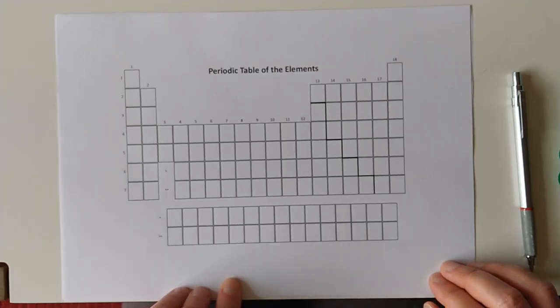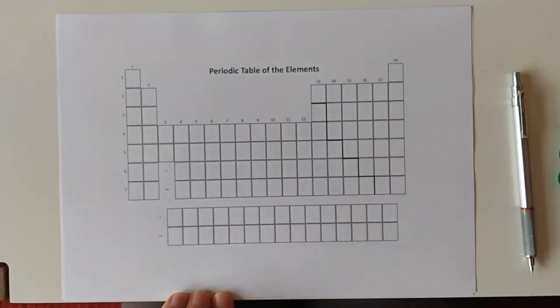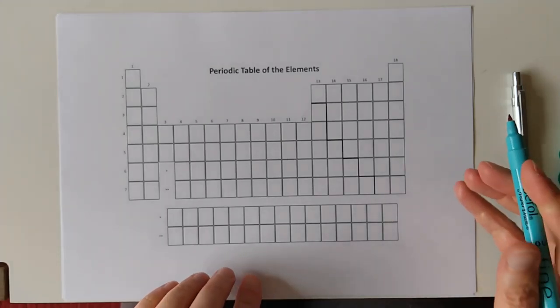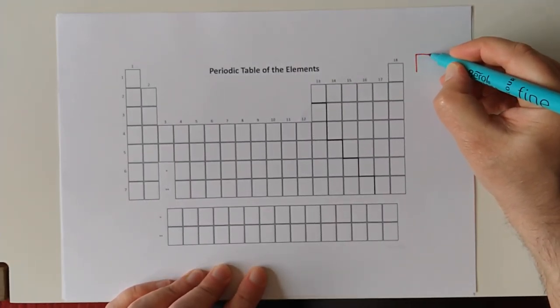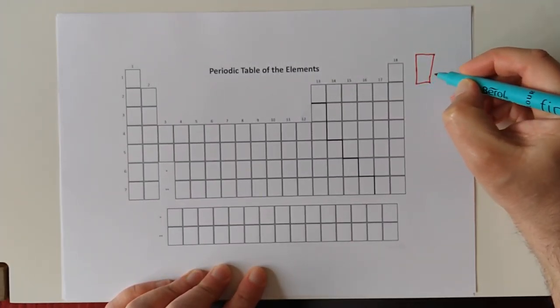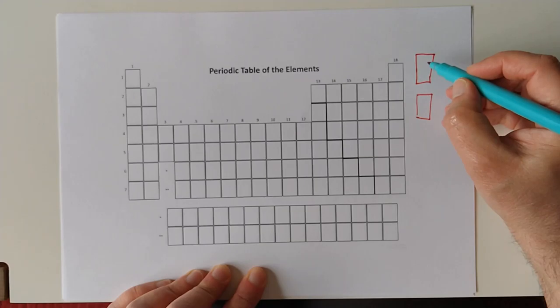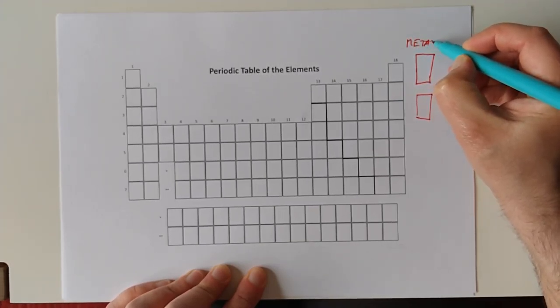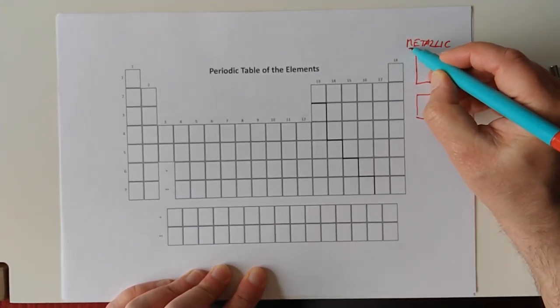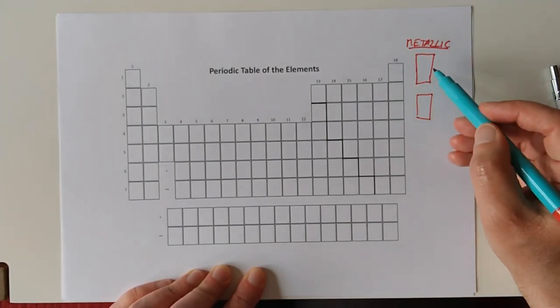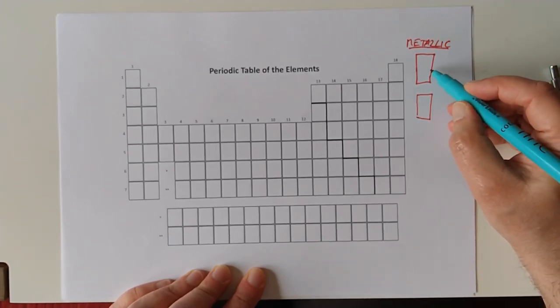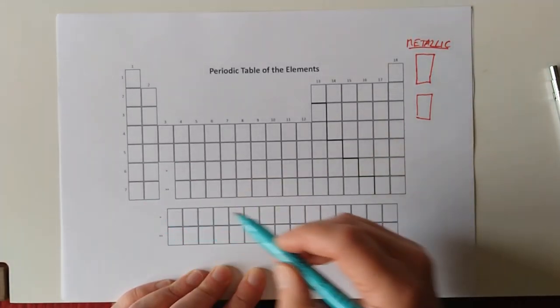One is revision from National 5, which is great news. The other one is new to higher. I'm going to refer back to this page through the next few videos. Let's put a key down the side and start with metallic bonding.